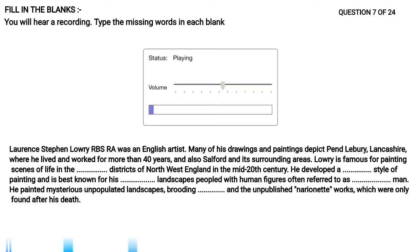Lawrence Stephen Lowry, RBS Raw, was an English artist. Many of his drawings and paintings depict Pendlebury, Lancashire, where he lived and worked for more than 40 years, and also Salford and its surrounding areas. Lowry is famous for painting scenes of life in the industrial districts of North West England in the mid-20th century. He developed a distinctive style of painting and is best known for his city landscapes peopled with human figures often referred to as Matchstick Man. He painted mysterious unpopulated landscapes, brooding portraits and the unpublished works, which were only found after his death.